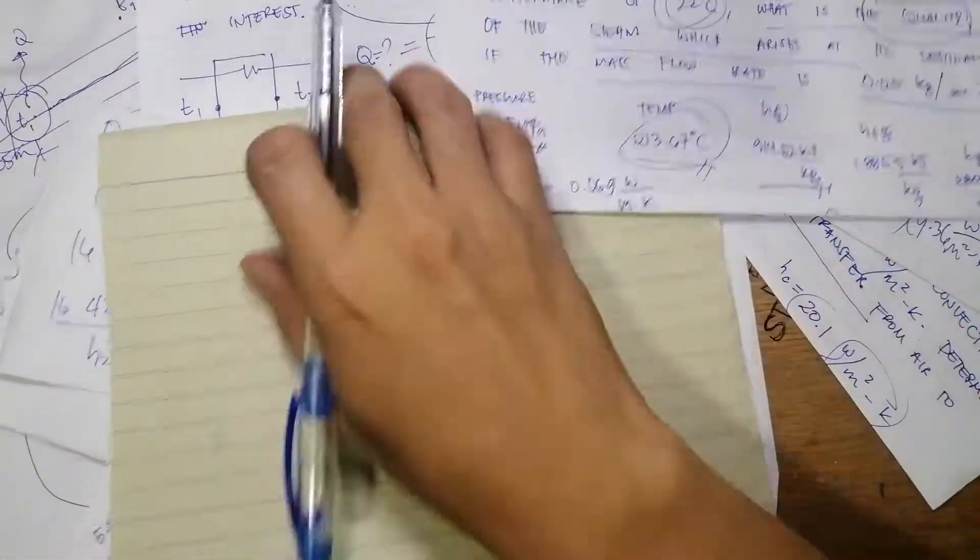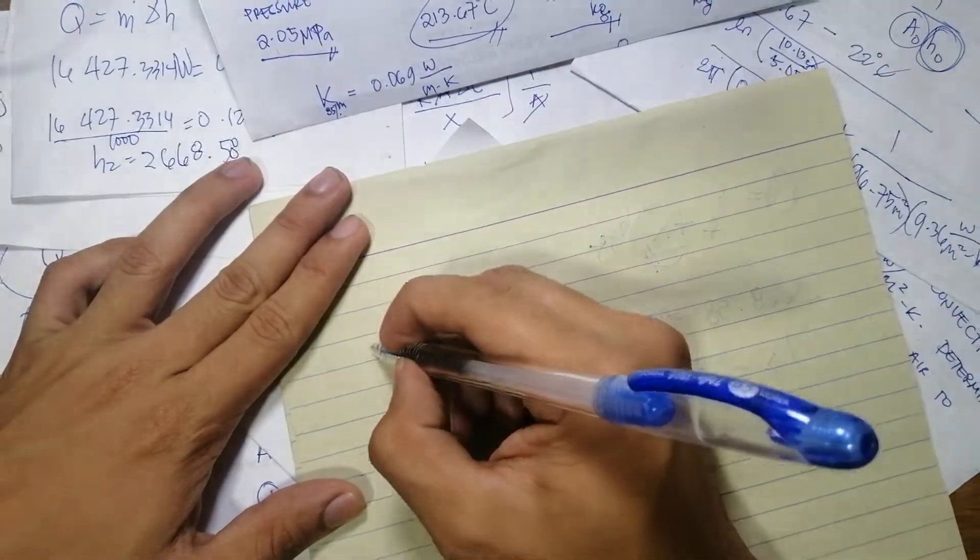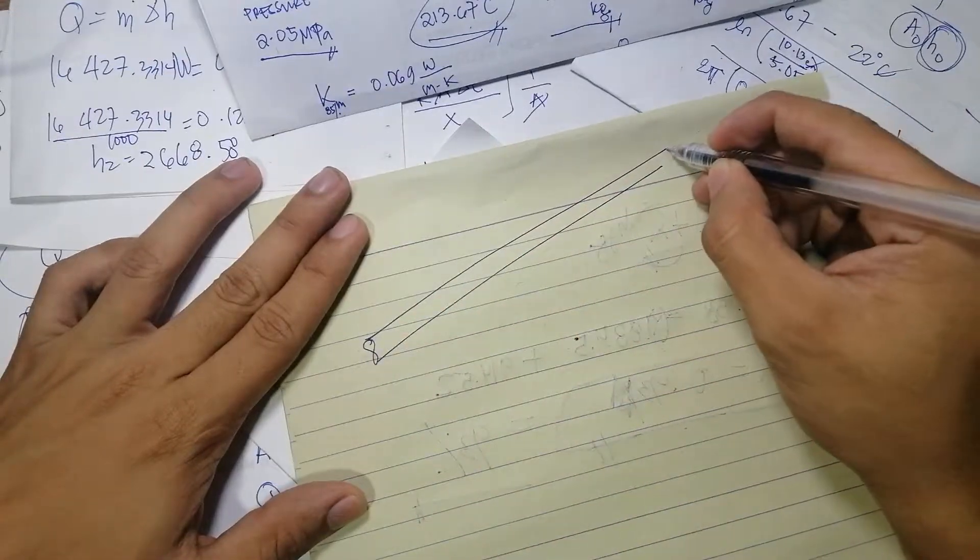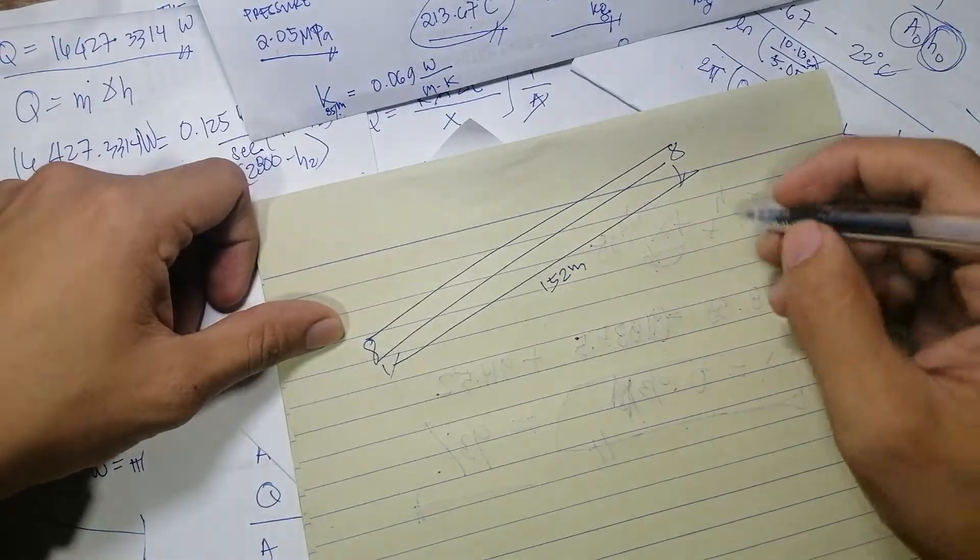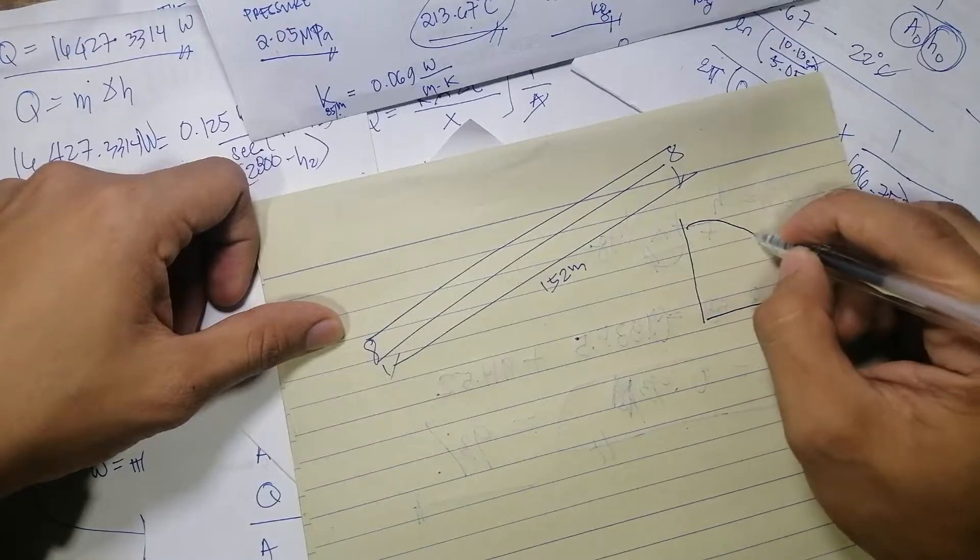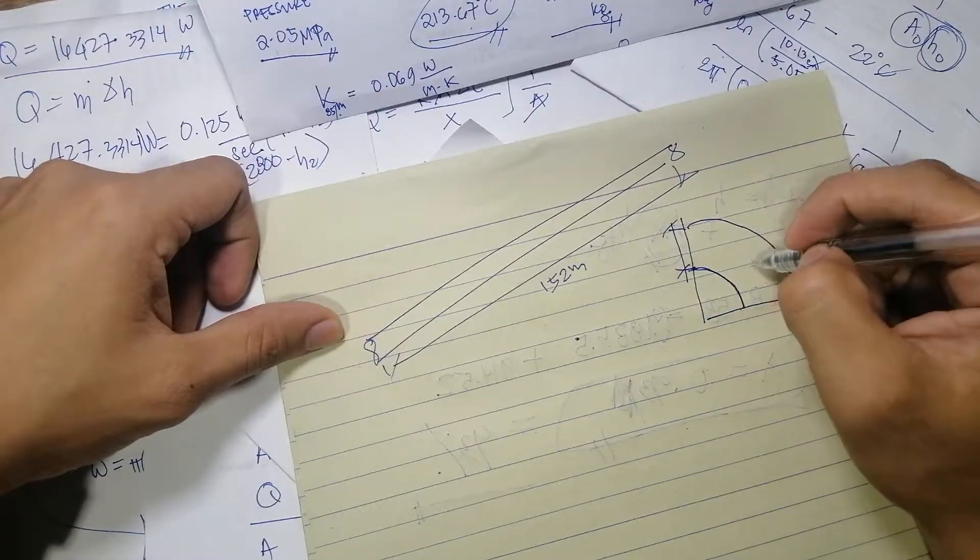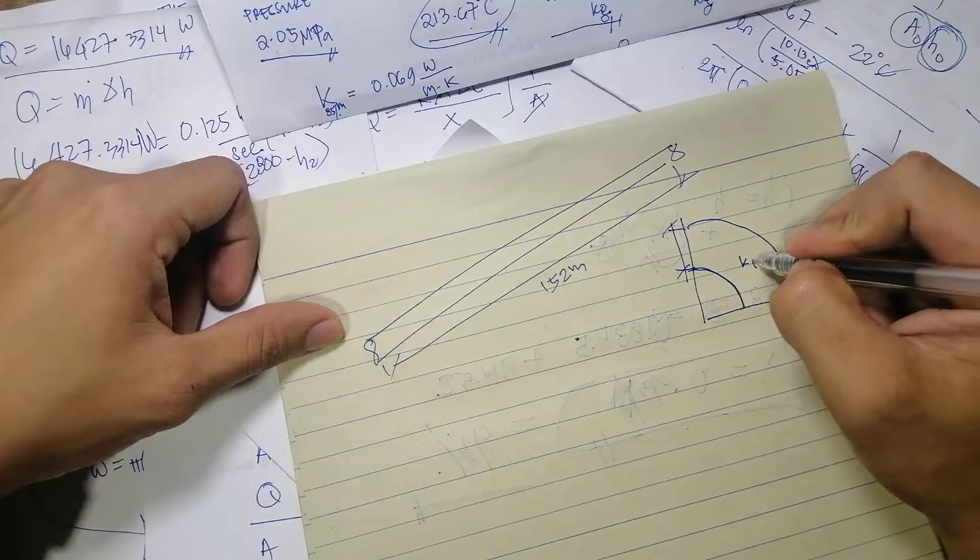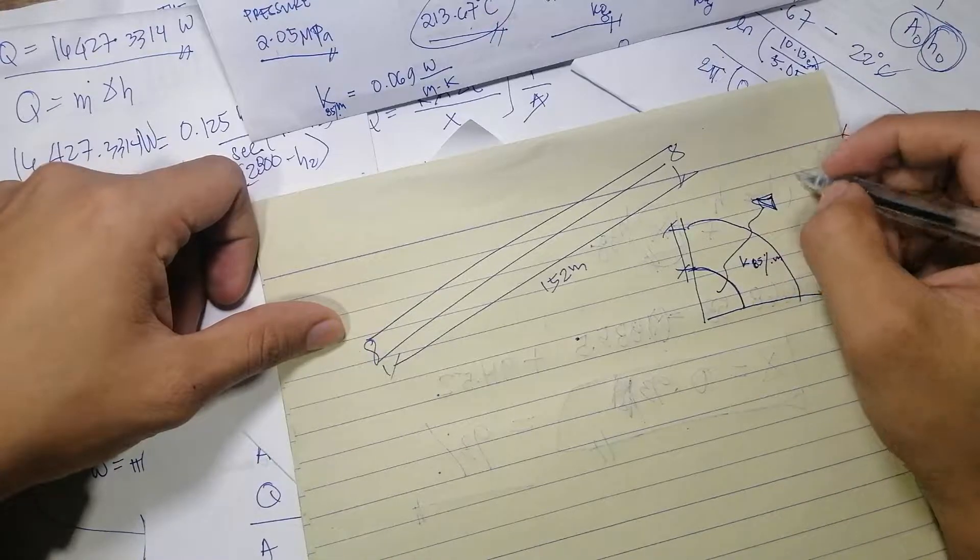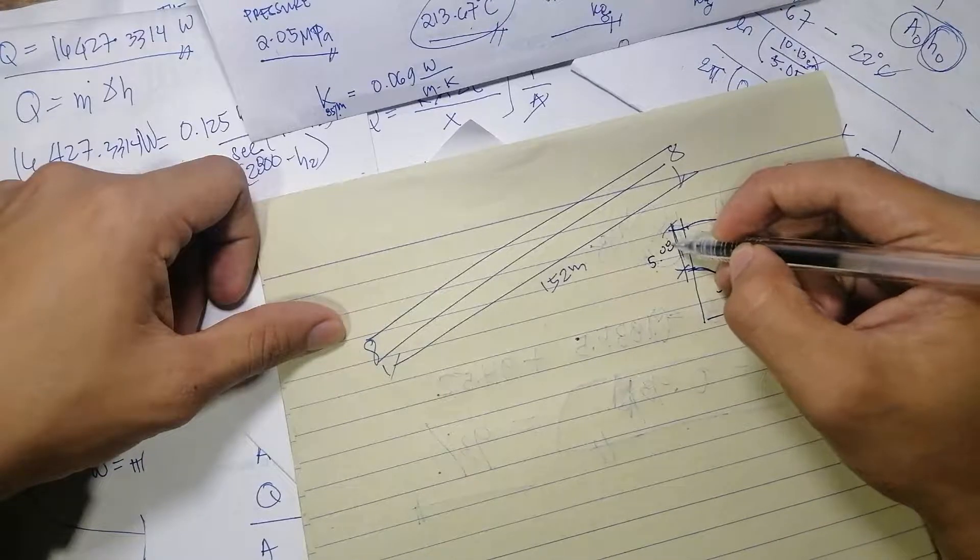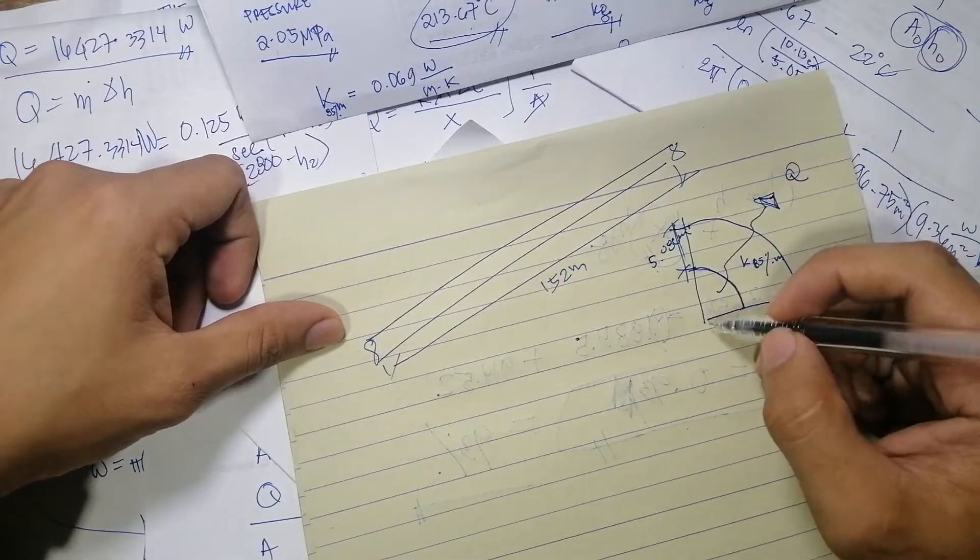Okay, let's do this. So what do we have here now is we have a pipe, and the pipe has a total length of 152 meters. We're going to get a quarter section of the pipe. This is the insulation with the value of K for 85% magnesium, and that is the heat Q. The thickness of the insulation is 5.08 centimeters, and the diameter of the pipe is 10.1 centimeter.